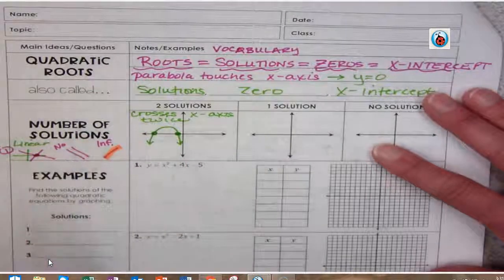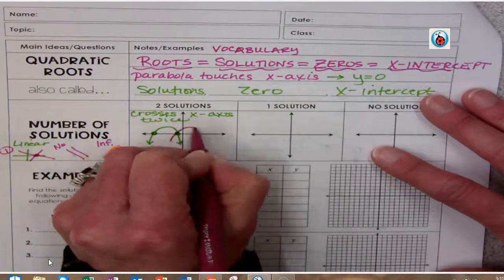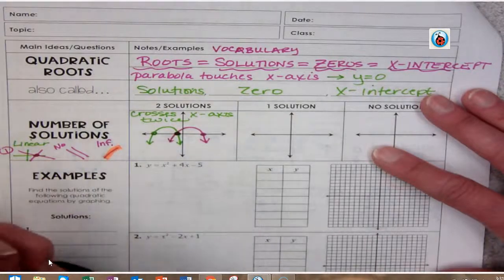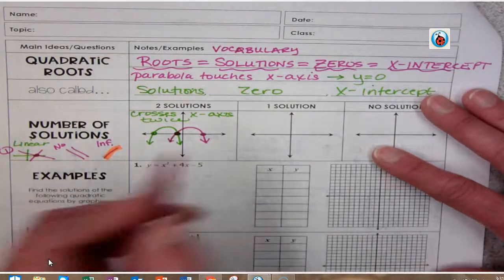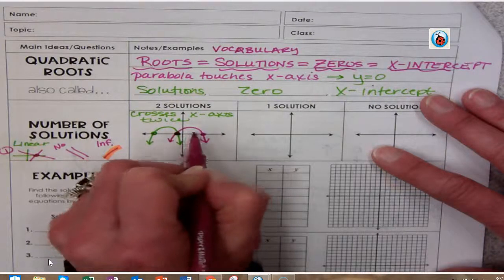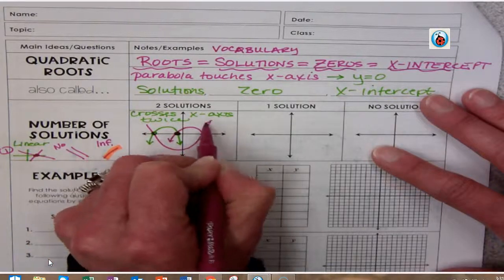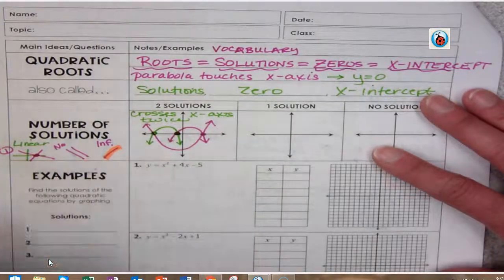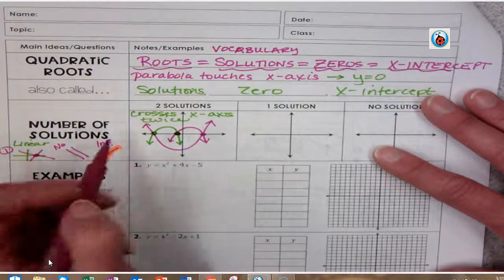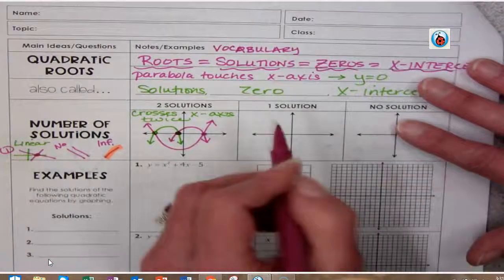It may also look like this, because that's the same exact thing, or it may look like this. Those are three parabolas that cross the x-axis twice—one here, one there.